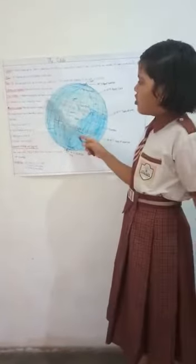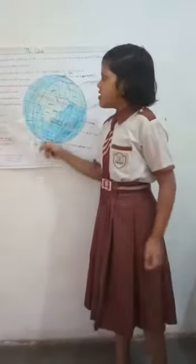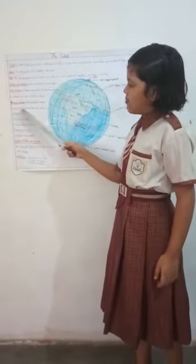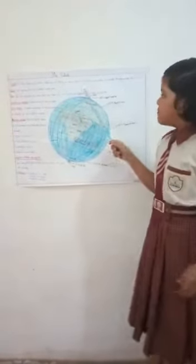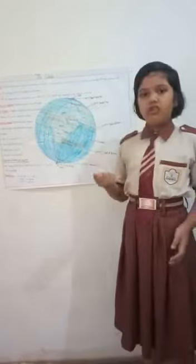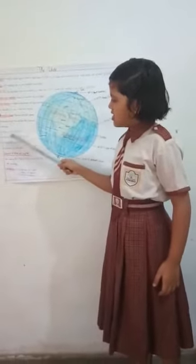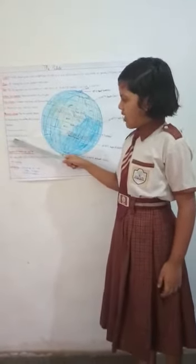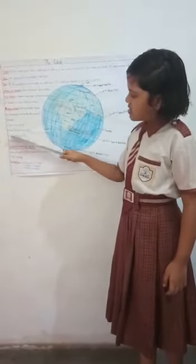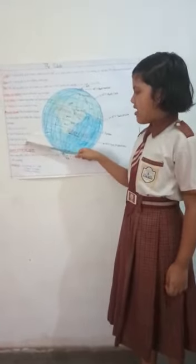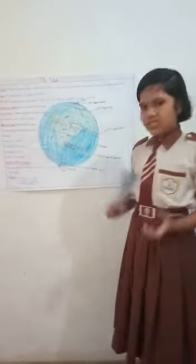There are important latitudes. Other than the equator and poles, there are four other important latitudes: 1. Tropic of Cancer at 23.5 degrees north. 2. Tropic of Capricorn at 23.5 degrees south. 3. Arctic Circle at 66.5 degrees north. 4. Antarctic Circle at 66.5 degrees south.